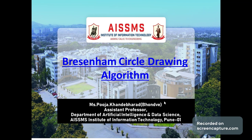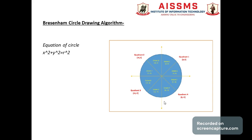We will focus on Bresenham's circle drawing algorithm. The equation of a circle is x² + y² = r², where x and y are the coordinates and r is the radius. In Bresenham's circle drawing algorithm, the circle is divided into quadrants using the point property of symmetry, forming octants. That gives us quadrant 1, quadrant 2, quadrant 3, and quadrant 4.